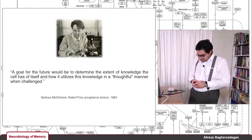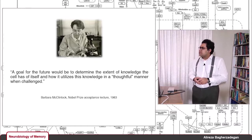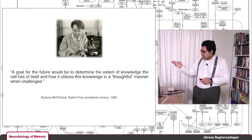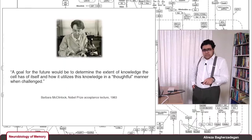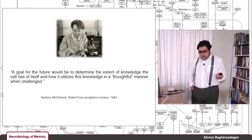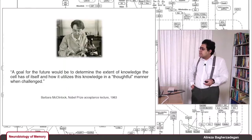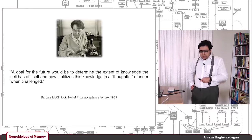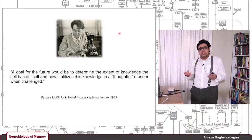This is Barbara McClintock, an American cytogeneticist who won the Nobel Prize in Physiology or Medicine for her work on the genetic structure of corn. In her Nobel Prize acceptance lecture in 1983, she said that a goal for the future would be to determine the extent of the knowledge the cell has of itself and how it utilizes this knowledge in a thoughtful manner when challenged. Scientists at that time knew that cells are somehow aware of their situation — what is happening inside them and in neighboring cells. Understanding how cells gain and use this knowledge is a very important goal for modern cell biology.